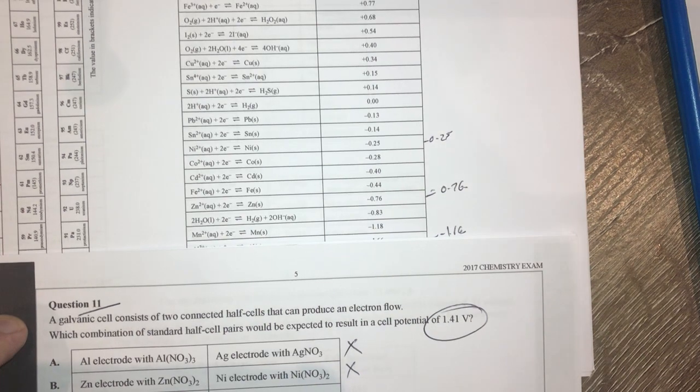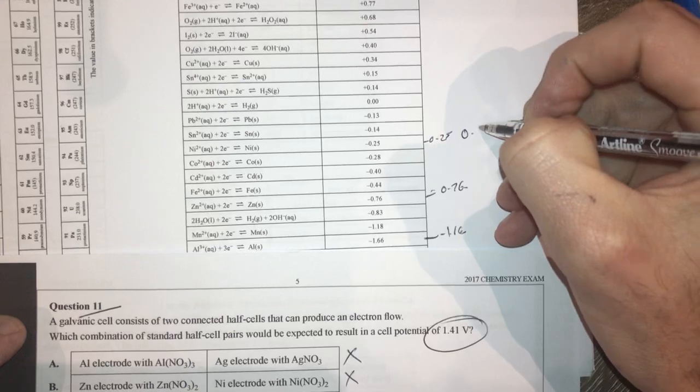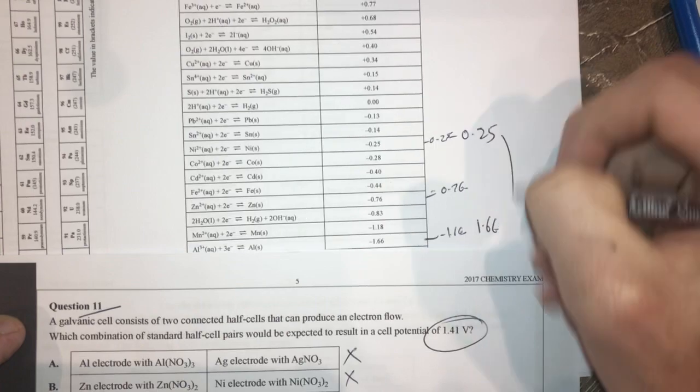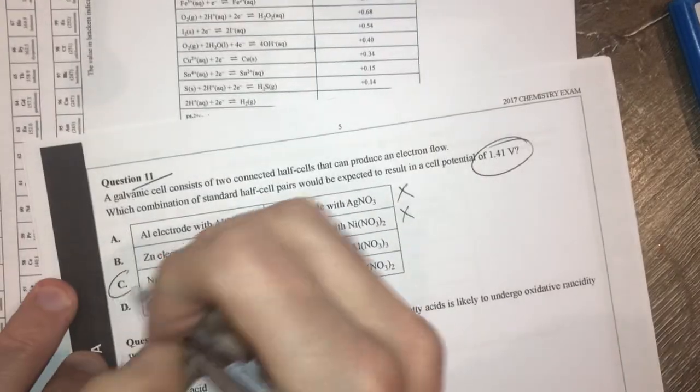Nickel and aluminium. Now we're looking at between 0.25 and 1.66. This is looking pretty good. It's 1.41. So therefore, I'm looking at C is going to be our correct answer.